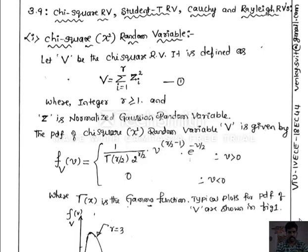Out of these 4 standard random variables, the first 3 — chi-square, student t, and Cauchy's random variable — are functions of the normalized Gaussian random variables. Whereas the Rayleigh's random variable is used to locate the position of any point on free space, on a screen, or on a PCB board. Now let us consider each random variable one by one.